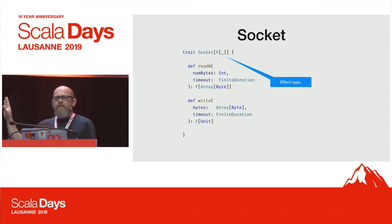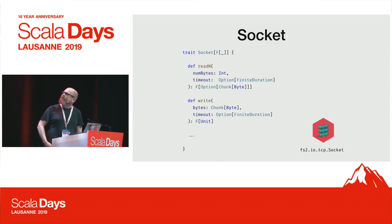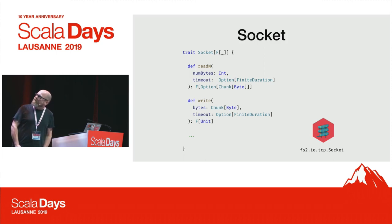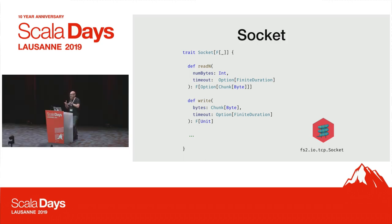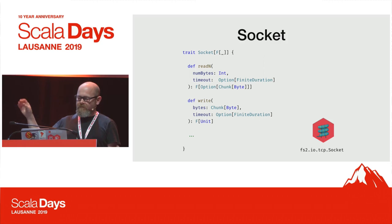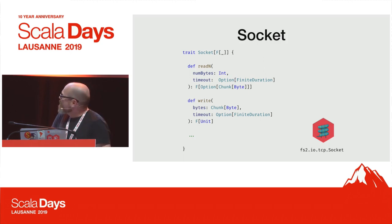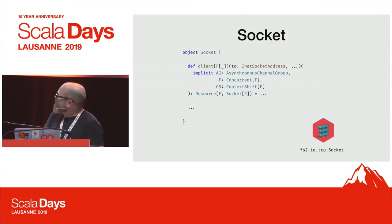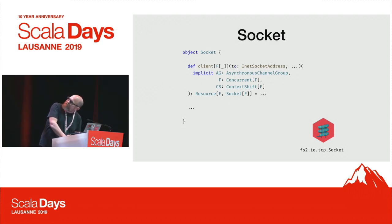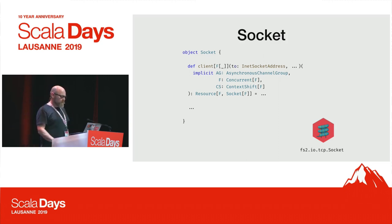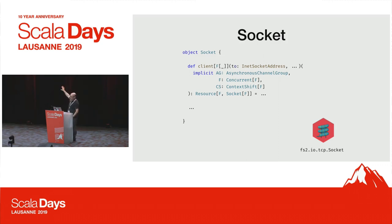It turns out there's already an implementation a lot like this provided by FS2 — they have a Socket. It uses a Chunk instead of a byte array; a Chunk is like an immutable array. A difference is that when we read a chunk we get back None if the socket is terminated before we get that many bytes. It's not exactly what we want but it's really close. Let's look at how we construct one of these sockets. There's a factory method that takes an InetSocketAddress and a bunch of other things with reasonable defaults. If you do programming with Cats Effect you'll know about Concurrent and ContextShift.